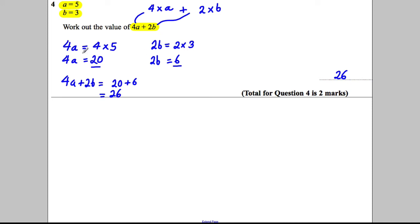So what do we get marks for? If we work out what 4 multiplied by 5 is and 2 multiplied by 3 is—the 20 and the 6—we get one mark, and we get our second mark for adding the two answers together.